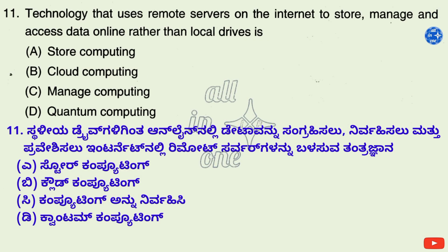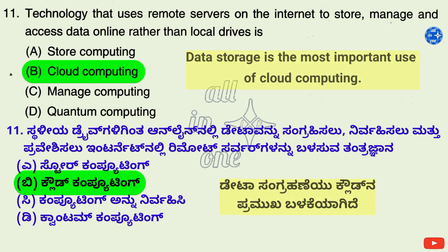Question 11. Technology that uses remote servers on the internet to store, manage, and access data online rather than local drives is — Options: A. Store computing, B. Cloud computing, C. Manage computing, D. Quantum computing. Right answer is B: Cloud computing. Data storage is the most important use of cloud computing.